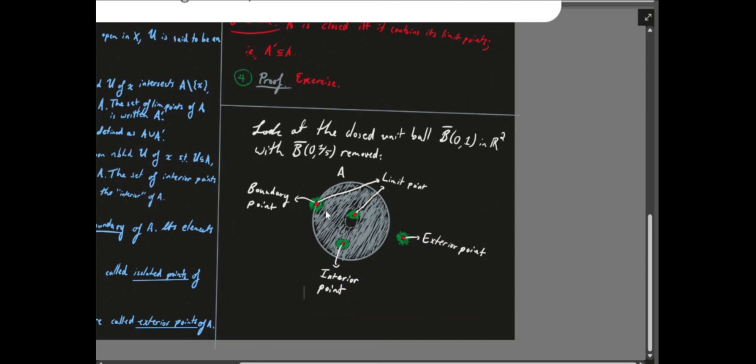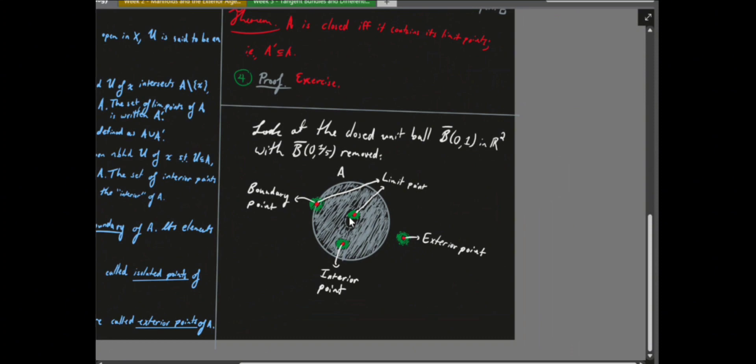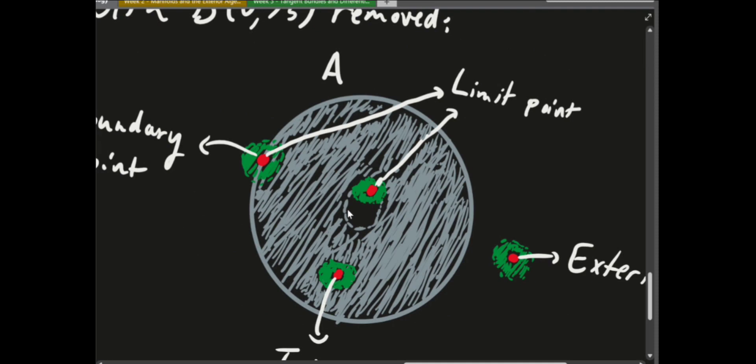You basically form an annulus where the outside is closed and the inside is open, by taking a closed ball in R2 and then removing a closed ball inside it that's strictly smaller. The boundary of that removed interior closed ball forms limit points of the annulus, but those aren't elements of the set. Any points on the interior or boundary of the annulus are also limit points.